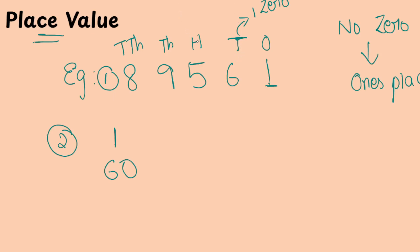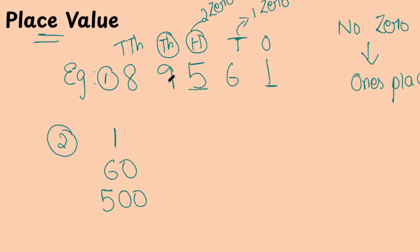Then the 100's place — how many zeros does 100 have? 2 zeros. So what I am going to write is: write the number 5 and add 2 zeros. Then next is 1000. In the 1000's place, how many zeros? 3 zeros. So you are going to write the number 9 and add 3 zeros.